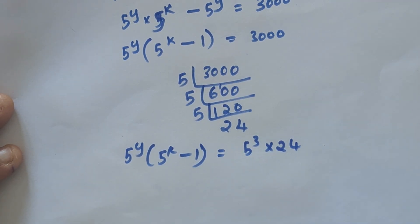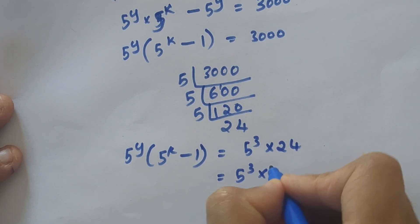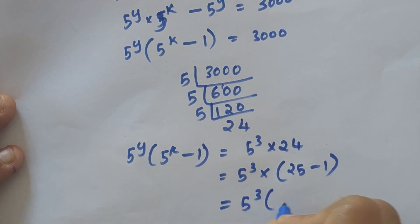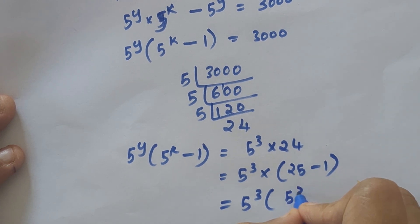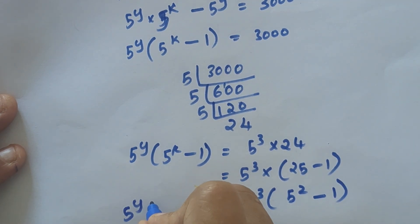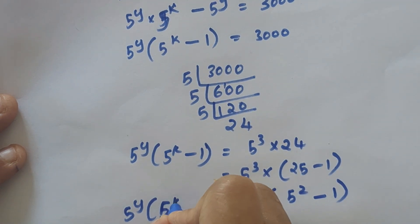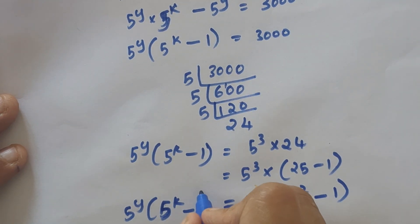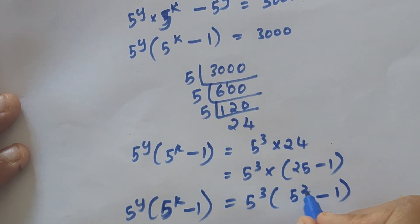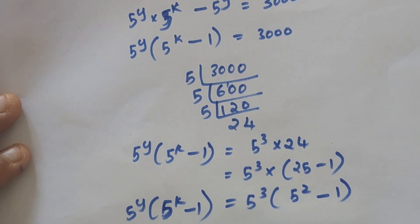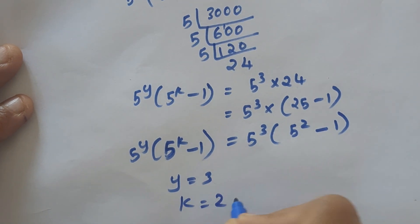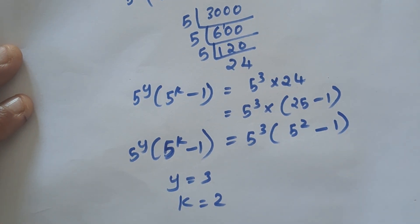Now 24 can be written as 25 minus 1, and 25 is 5 squared. So we have 5 cubed into (5 squared minus 1). Comparing both sides — 5 raised to Y into (5 raised to K minus 1) equals 5 cubed into (5 squared minus 1) — we can say Y equal to 3 and K equal to 2.